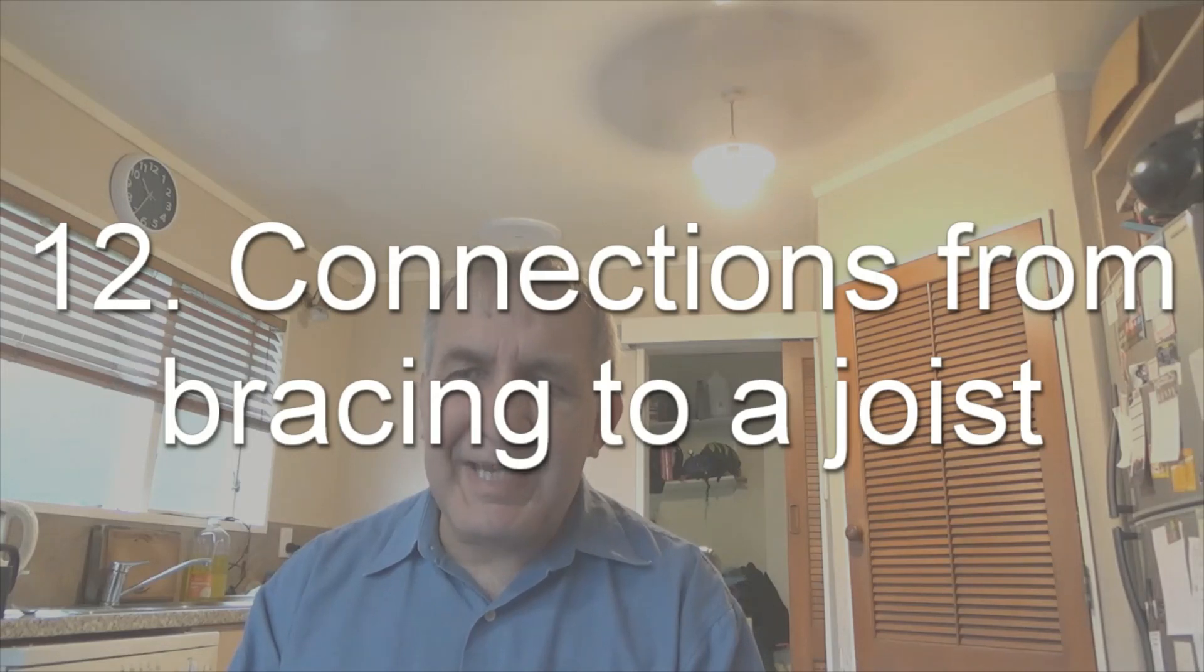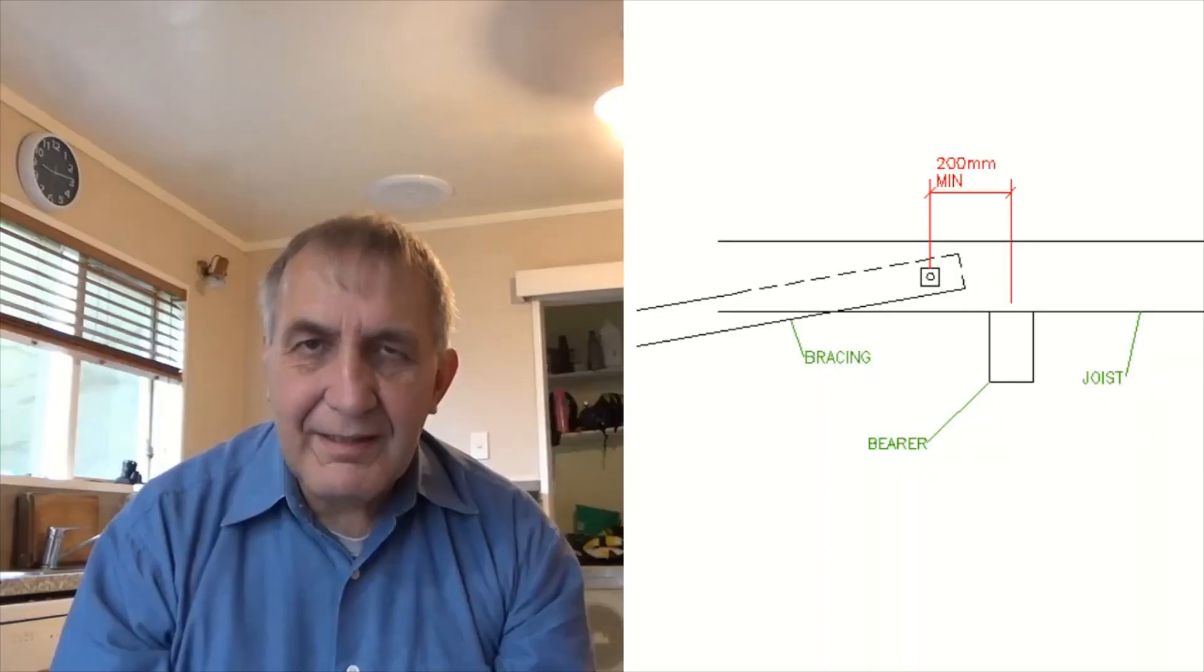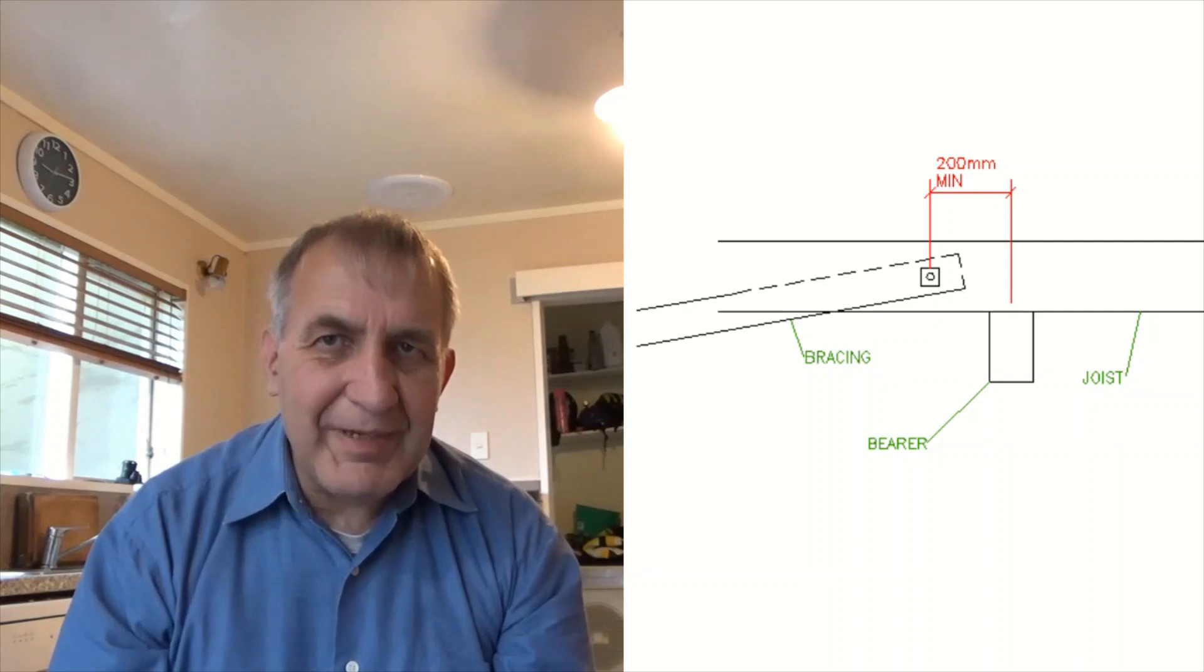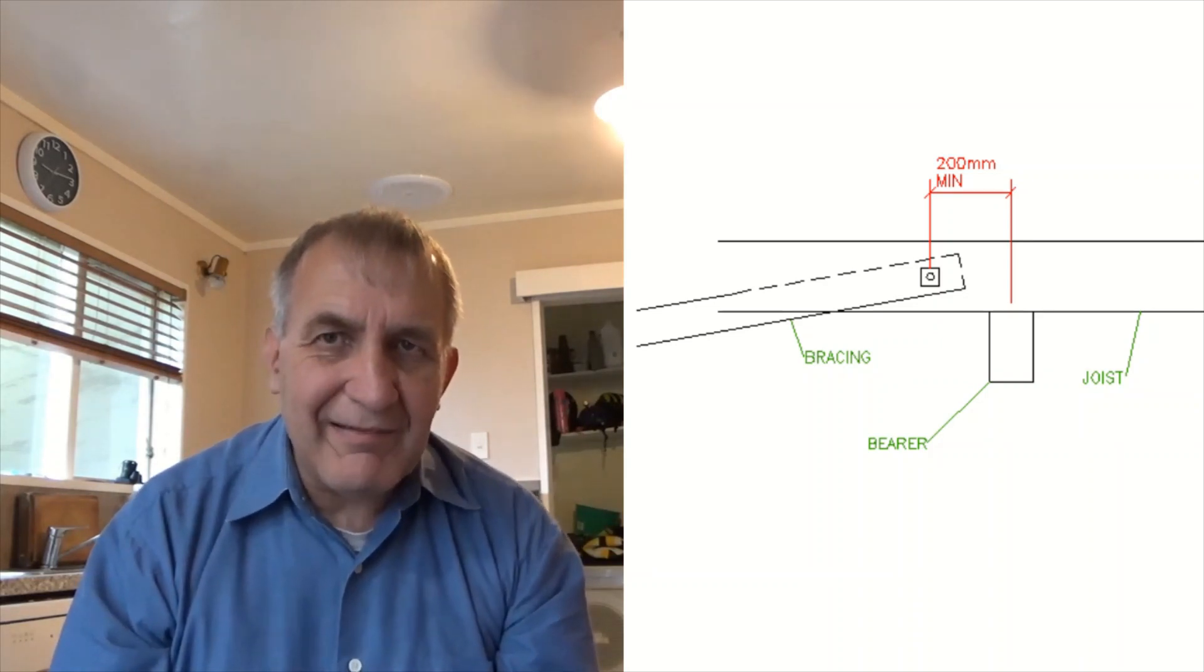For the connection between bracing and a joist where this is parallel, this needs to be within 200 millimeters of the center of the bearer or the ledger.